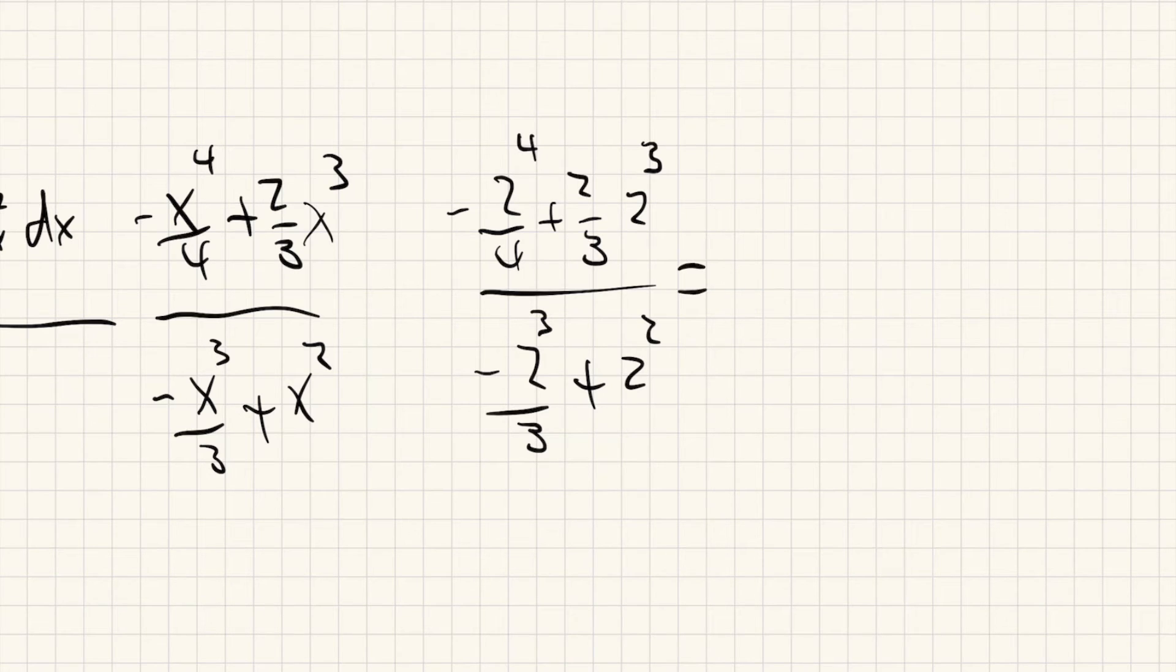And this is just going to come out to, let's see, 2⁴ is going to be 16 divided by 4, so -4 plus 2/3 of 8, which is 2/3 of 8 divided by -8/3 + 4.